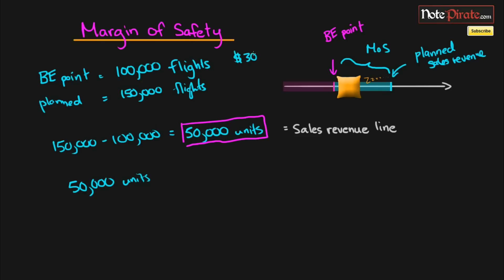You can say 50,000 units, and in the example I provided, it was actually $300 a flight, which is relatively cheap. We can just multiply 50,000 units by $300 a flight, and our margin of safety in dollar form is going to be $15 million. We can lose $15 million of sales before we begin to fall into loss territory.